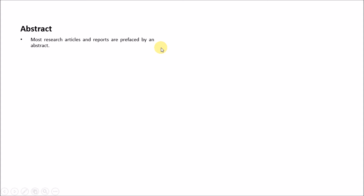An abstract appears at the beginning of any manuscript, journal, or work — but does that mean it is written at the beginning? No, not really. An abstract is written basically after finishing everything, and then placed at the top.